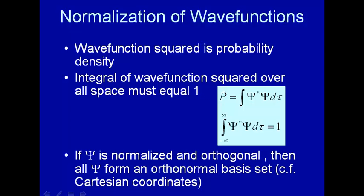We said that the square of the wave function is equal to the probability density, and if we multiply that by some volume, that will give you the probability of finding a particle in a particular volume.